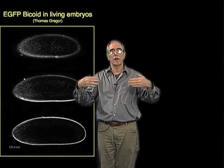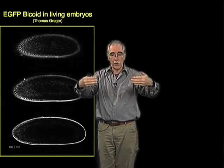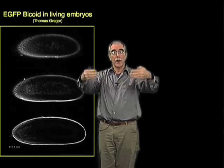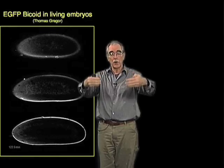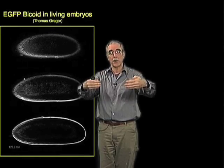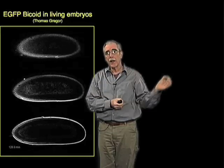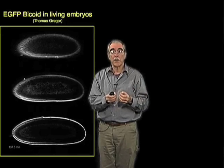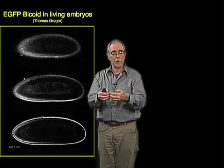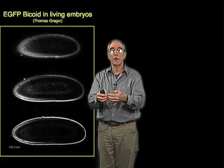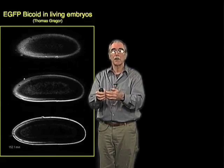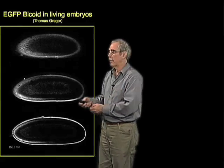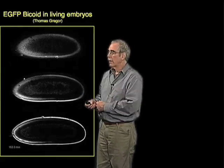This EGFP-bicoid construct is expressed as RNA in the mother and localized appropriately. If you put it into a mutant embryo — mutant for bicoid — it will rescue and produce perfectly normal development, indistinguishable from that seen in wild-type embryos.